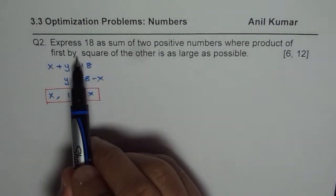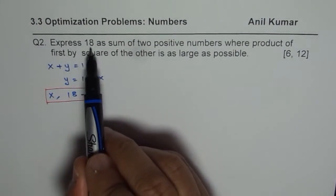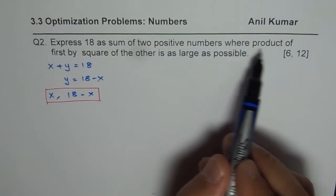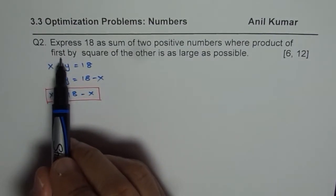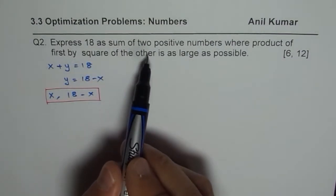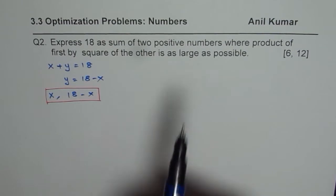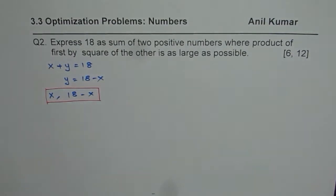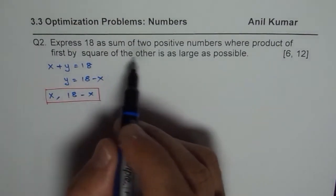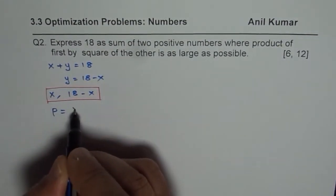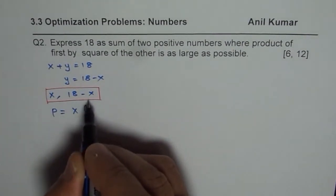Let us read the question once again. Express 18 as sum of 2 positive numbers where product of first by square of other is as large as possible. So we are looking for product of first by square of the other.